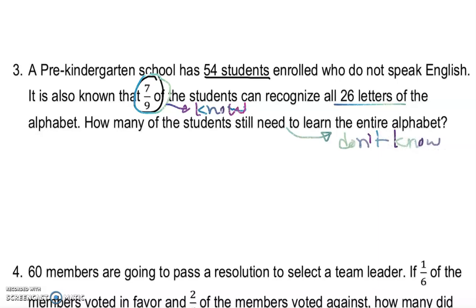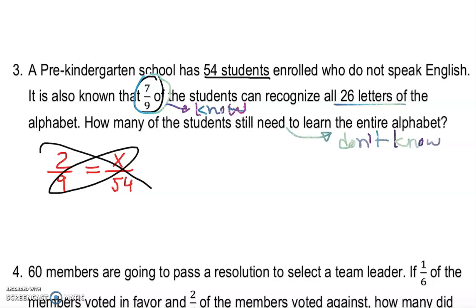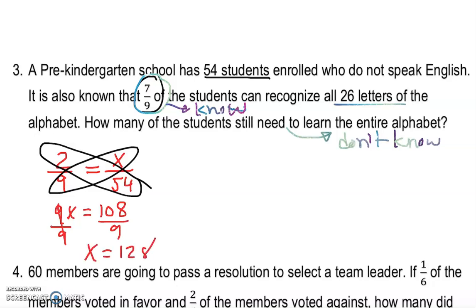If we're clear about what the question asks: if 7 out of 9 know, then 2 out of 9 don't know — and that's what the question is asking. So I can say 2 over 9 equals x over 54. Cross multiply: 9x equals 54 times 2, which is 108. Divide by 9, and x equals 12 students who still need to know.